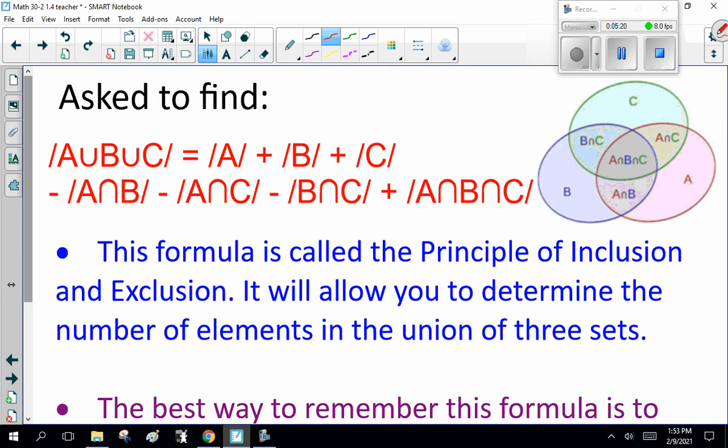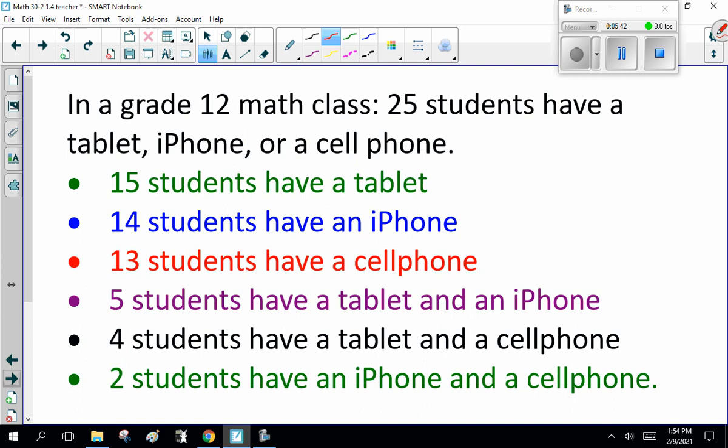This formula is called the principle of inclusion and exclusion. It will allow you to determine the number of elements in the union in three sets. The best way to remember this formula is to figure out how to add up the pieces. And notice what we've done is we've taken a circle. It's a different diagram. One, two, three, four, five, six, seven. Yes, seven pieces, figuring out what each piece is worth.